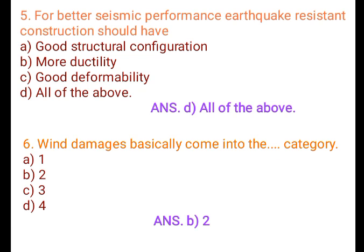Question 6: Wind damages basically come into which dilapidation category? A. 1, B. 2, C. 3, D. 4. Answer: B. 2.